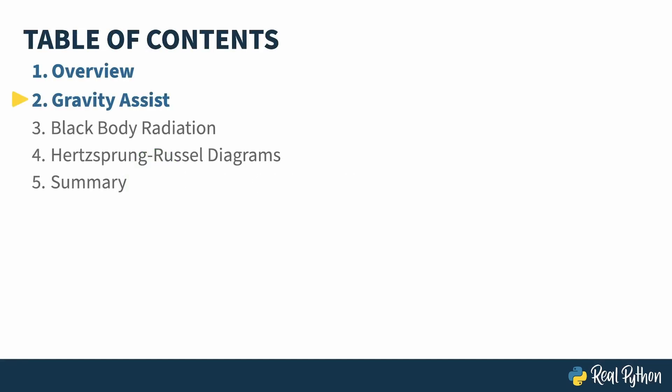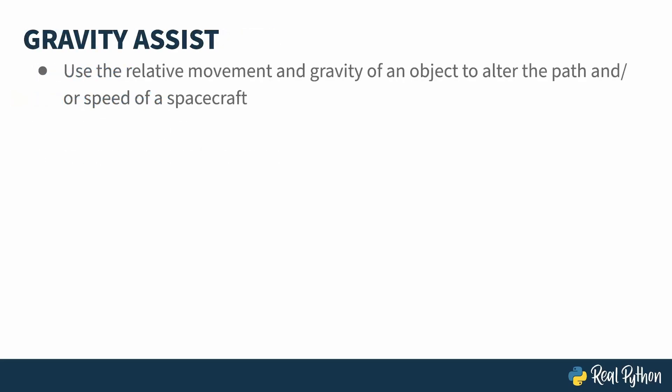In the previous lesson, I gave an overview of the course. In this lesson, I'll show you how to do calculations that include units using gravity assist slingshots as an example. The gravity assist, sometimes known as a slingshot maneuver, is one where a spacecraft uses the gravity of a planet, or a sun, pretty much anything big, to alter its path and/or velocity.